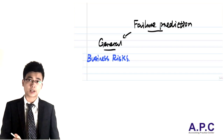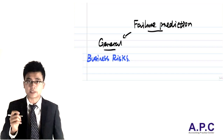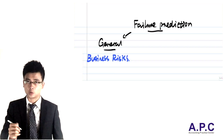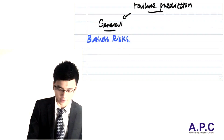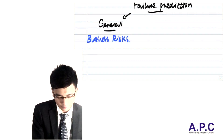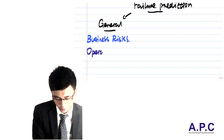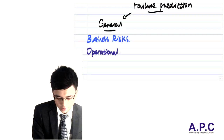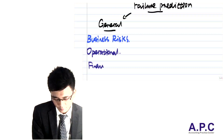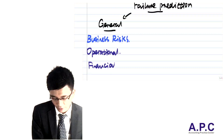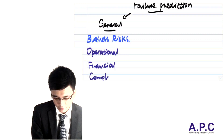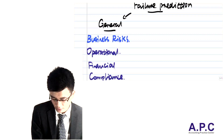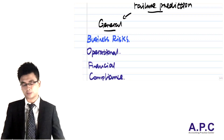What I mean by business risk is the risk that the business would go wrong due to three factors. Firstly, operational factors. Secondly, financial factors. And thirdly, compliance factors — compliance with the laws and regulations.